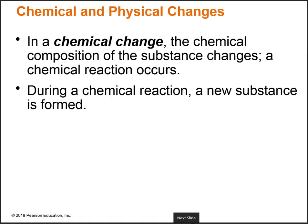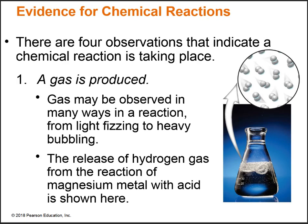If you have a chemical change, however, the substance itself is changed — there's a chemical reaction, and you form a new substance. There are four different pieces of evidence we can use to say a chemical reaction has taken place. The first is that a gas is produced. If you've ever seen baking soda vinegar volcanoes, mixing the two — maybe adding a little detergent to enhance the effect — you're seeing a gas be formed.